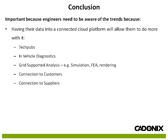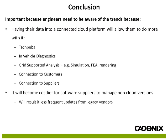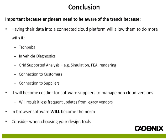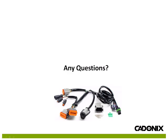Those same collaboration benefits apply between you and your suppliers. For example, if you're designing a harness and your harness manufacturer has issues because their machine creates harnesses to a different specification, you can discuss it and change the drawings right there and then. It's also going to become costlier for software suppliers to manage their non-cloud versions — you'll start seeing this with less frequent updates from legacy vendors. You need to consider: if a vendor spent many years developing their current non-cloud platform and everyone is shifting to the cloud, are they likely to spend another 10 years migrating to the cloud, or are they more likely to just drop their entire division? How important is your business to them? Consider this when choosing your design tools. If you have any questions, please email me at andrewa@codonics.com.